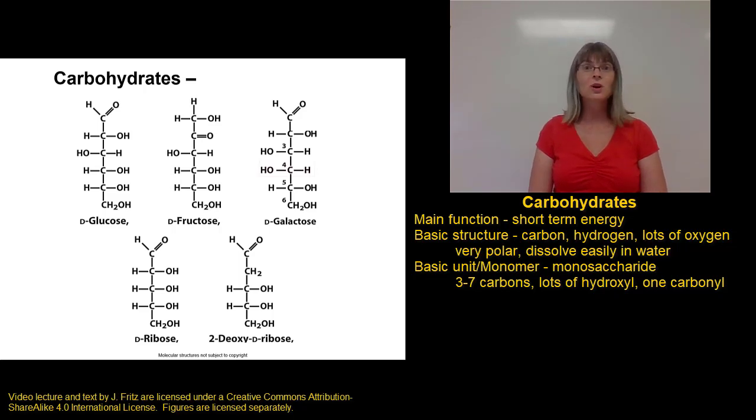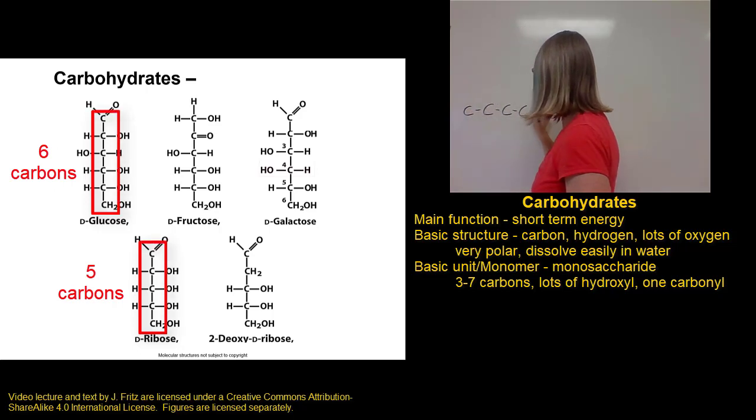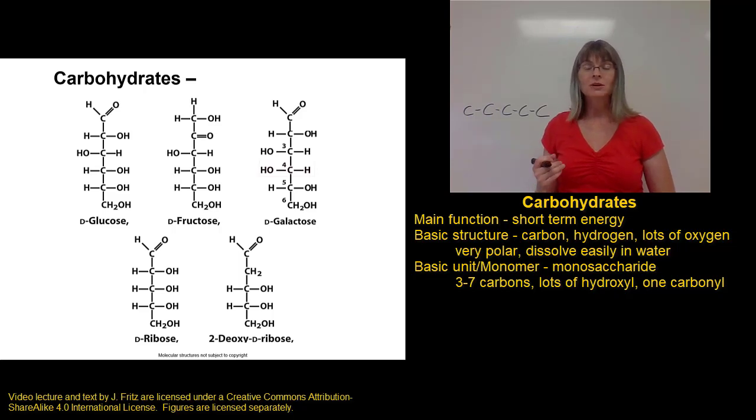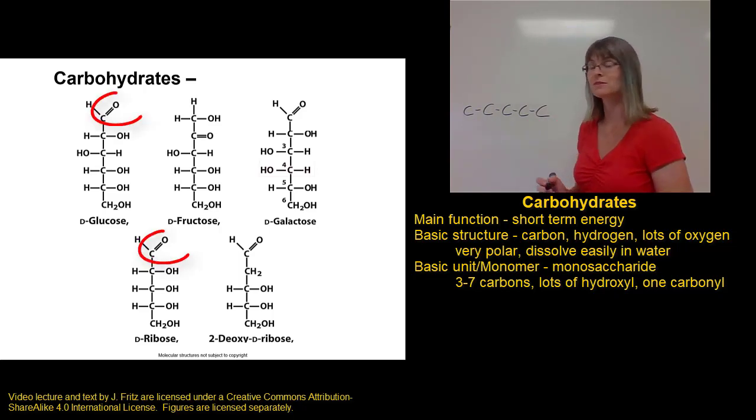Let's take a closer look at the structure of a monosaccharide. You can see a number of different monosaccharides shown on the screen, and they all have some things in common. To build a monosaccharide, you start with a chain of carbon atoms, three to seven carbon atoms in a row. Next, we add one carbonyl group. Remember that a carbonyl group is a double-bonded oxygen, so we're going to have a double-bonded oxygen attached to one of these carbons.